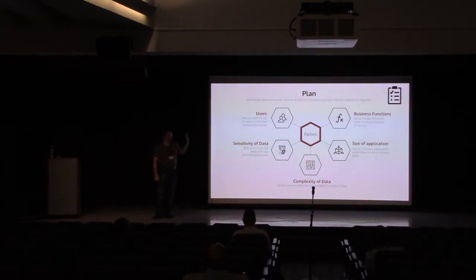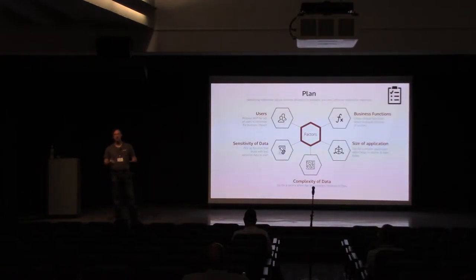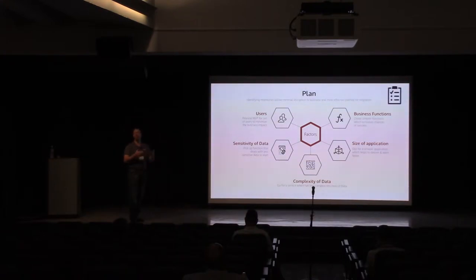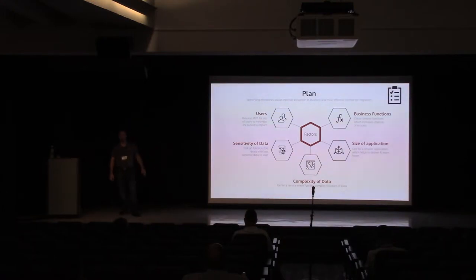Understanding business functions and the order in which you can tackle them is one of the most concrete ways to approach planning. Some business functions will be simple, some more involved, and there will be interdependencies between them. Mapping these out and figuring out what order to approach them in will be critical for success. Application size and complexity of data play similar roles.